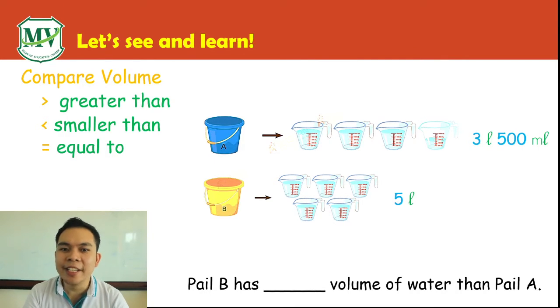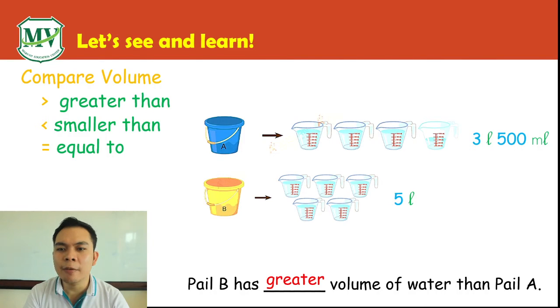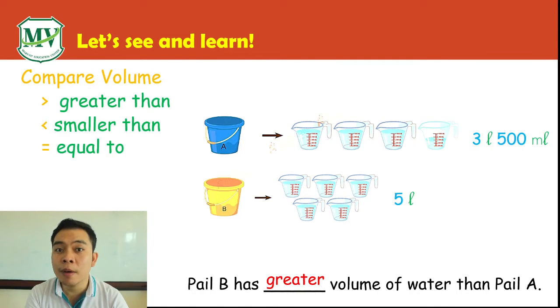Very good! It's greater. Pail B has greater volume of water than Pail A because Pail B has more volume of water.